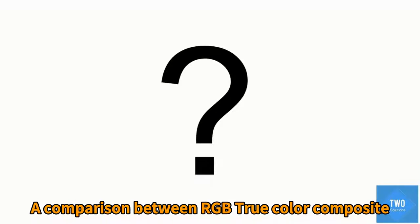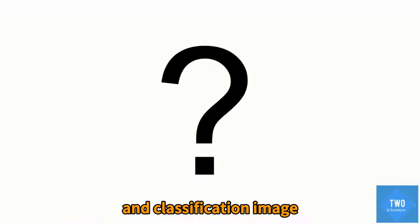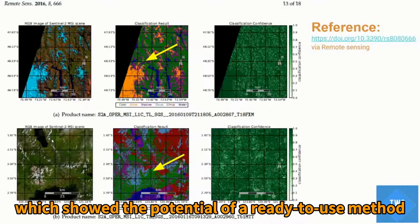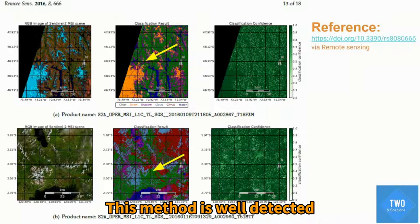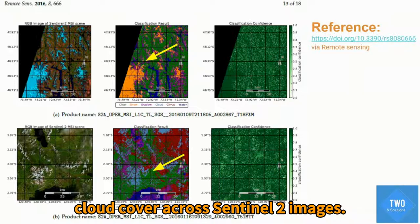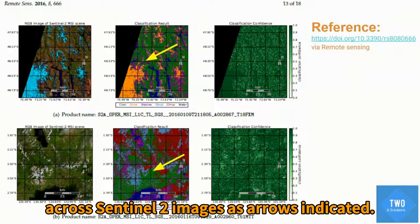A comparison between RGB true-color composite and the classification image shows the potential of this ready-to-use method with machine learning techniques. This method is well-detecting cloud cover across Sentinel-2 images, as indicated by the arrow.